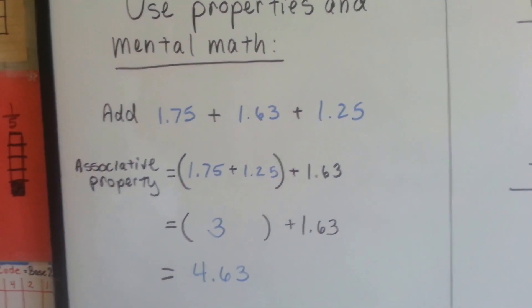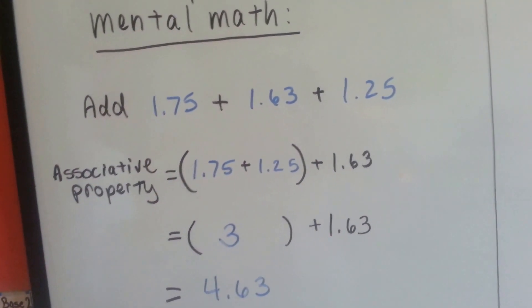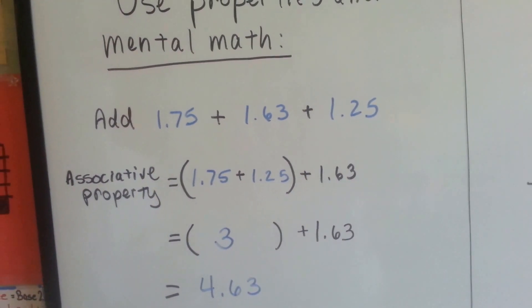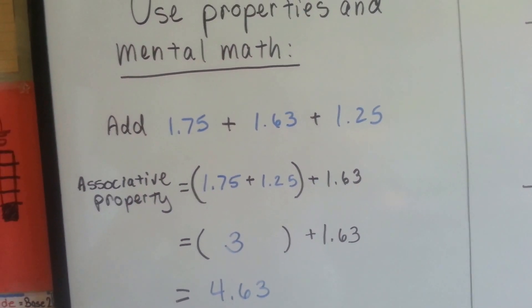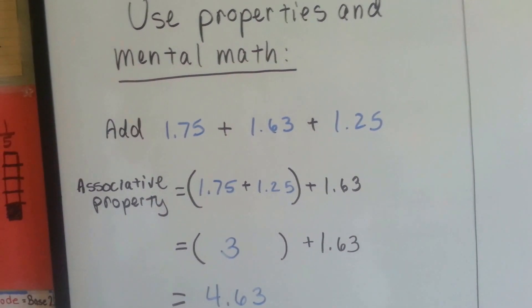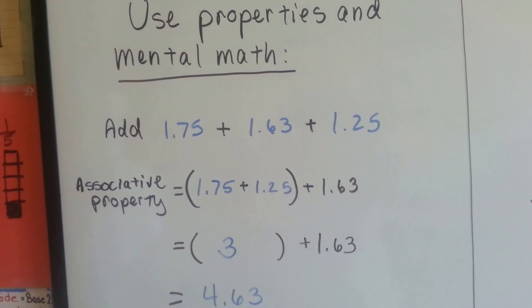So if we wanted to add 1.75, which is 1 and 75 hundredths, to 1.63, which is 1 and 63 hundredths, and we wanted to add to those two 1.25, which is 1 and 25 hundredths...